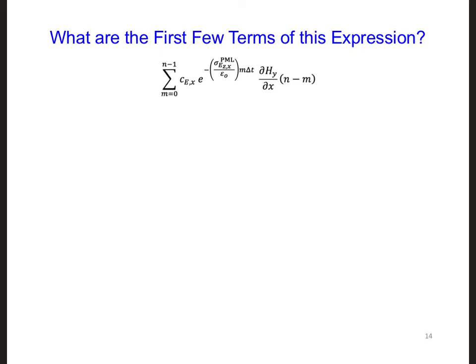Let's consider the first few terms of this summation. When n is equal to 1, then m is going to iterate from 0 to 0, and we only get one term. So we get c_ε_x times dH_y/dx, and the first value.